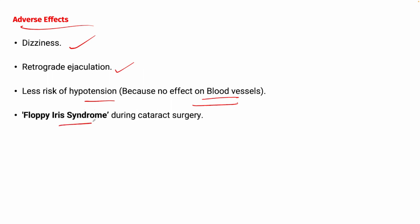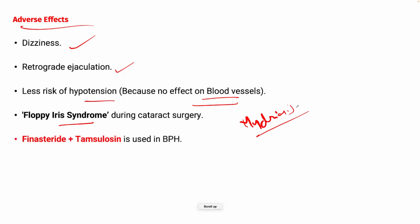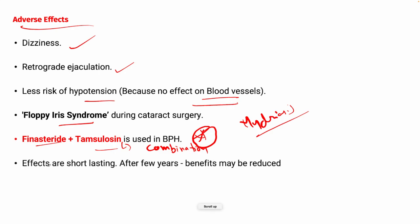Floppy iris syndrome during cataract surgery is another adverse effect — there is a loss of muscle tone in the iris, resulting in less mydriasis during surgery. Importantly, finasteride and tamsulosin are used in combination form to treat BPH. However, if effects are short-lasting, the benefit may be reduced after a few days.